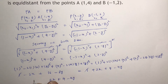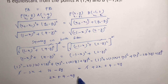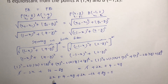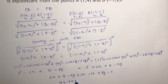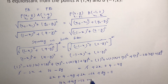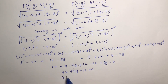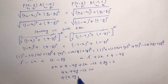Bringing all terms to the other side gives: plus 2X minus 16 plus 8Y equals 0. So 2X plus 2X is 4X, minus 4Y plus 8Y is 4Y, and 4 minus 16 is minus 12. Taking 4 common: X plus Y minus 3 equals 0.